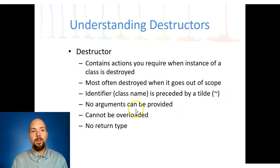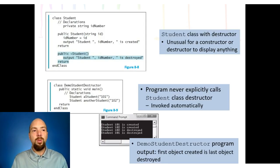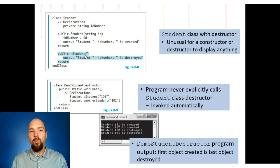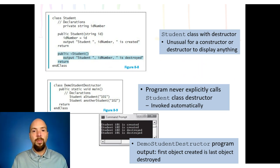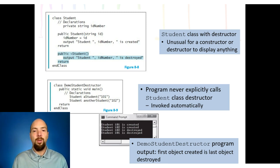With the destructor, we cannot provide arguments, we cannot overload it, and there's no return type. In this example we have public tilde student — this is the destructor. We can state things like 'this object has been destroyed.' If I create actor one, actor two, actor three, and then decide actor one no longer exists, I can destruct actor one and the system tells us actor one was destroyed.